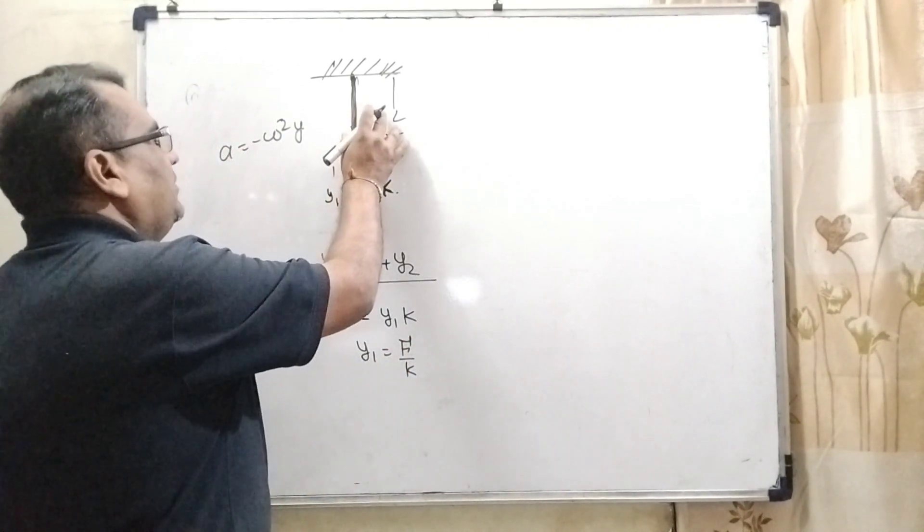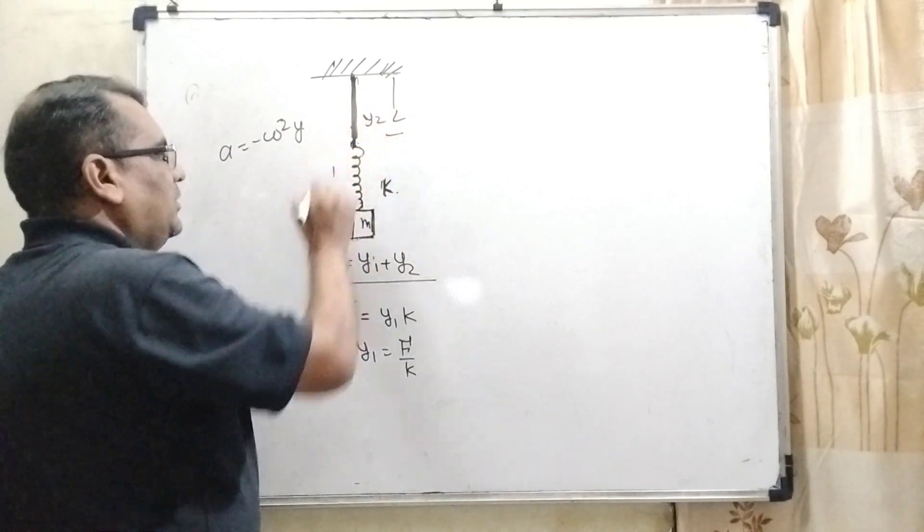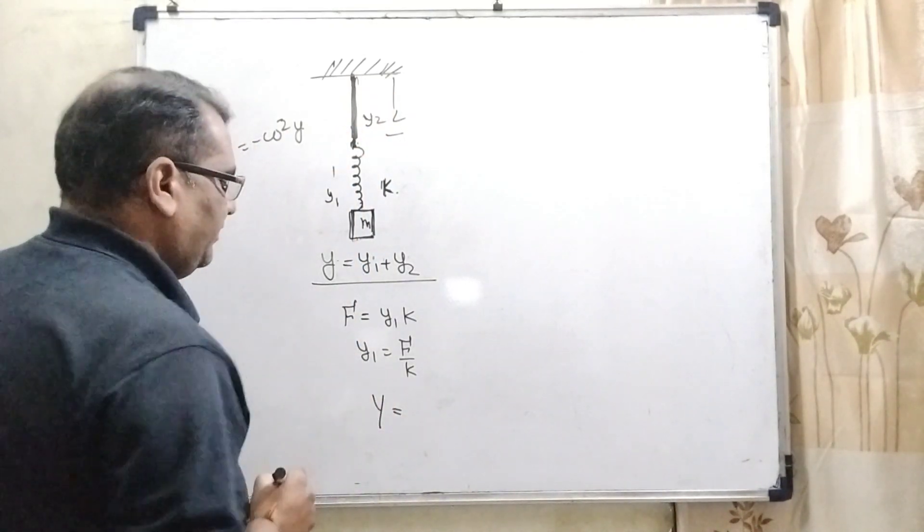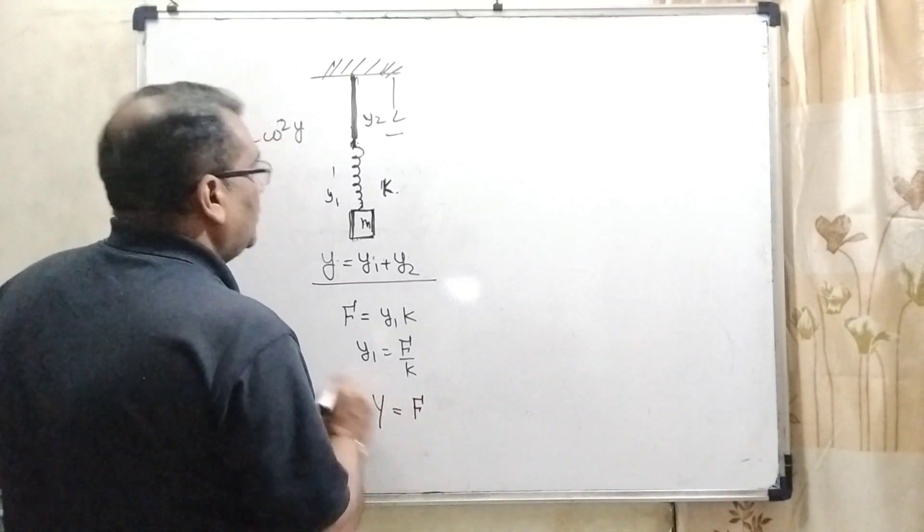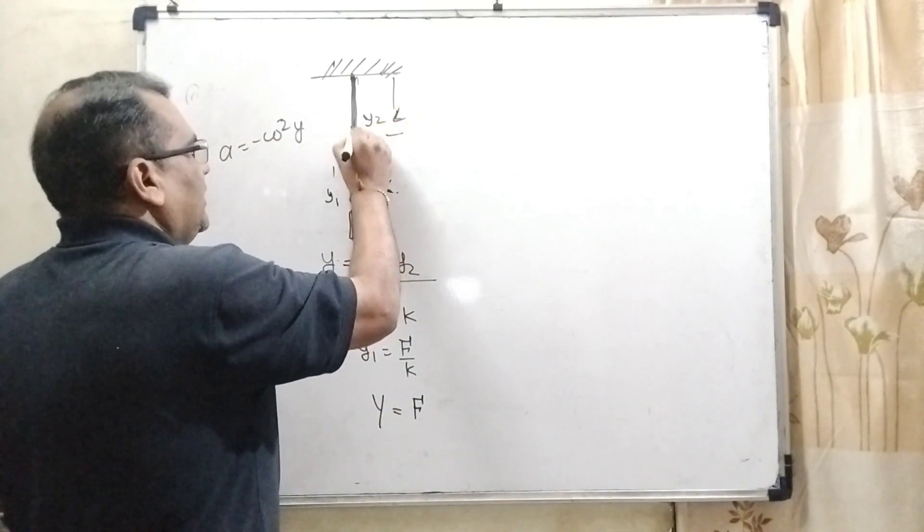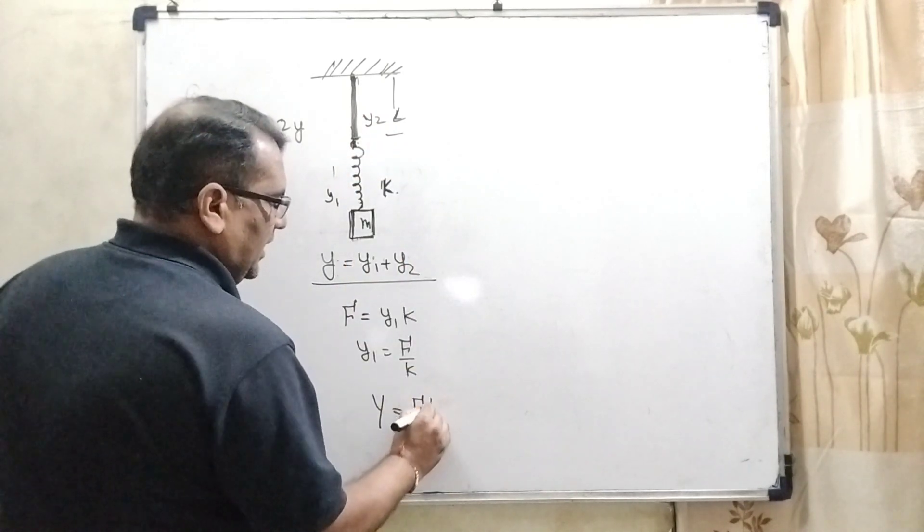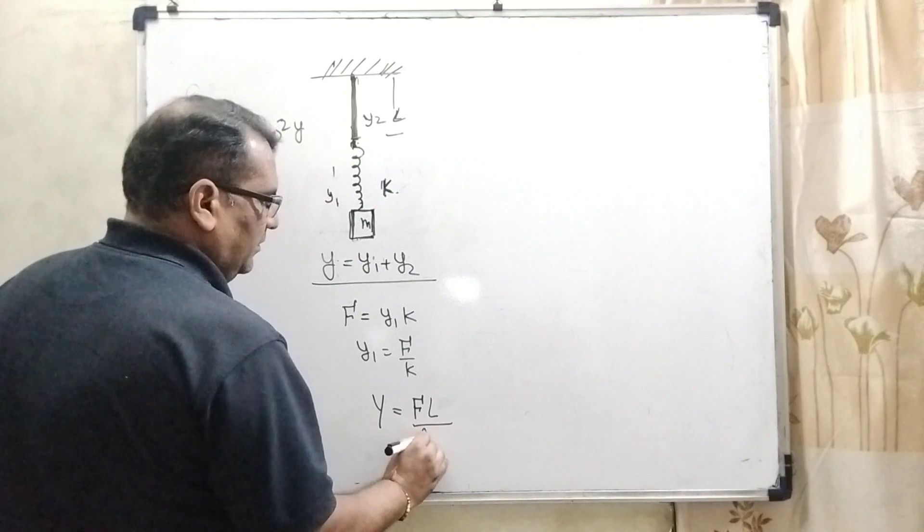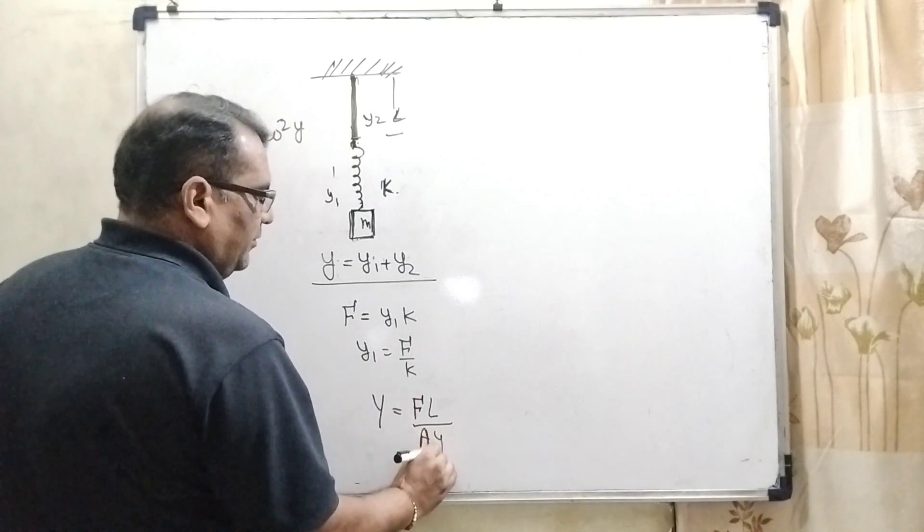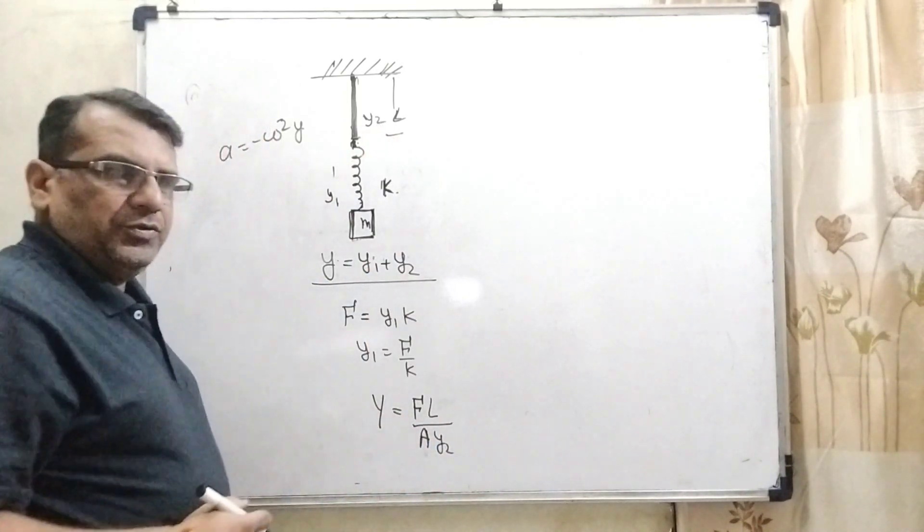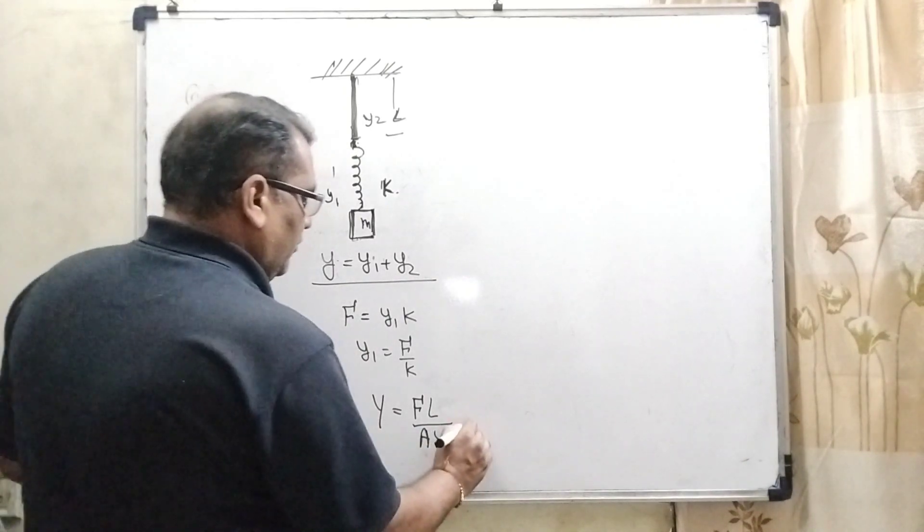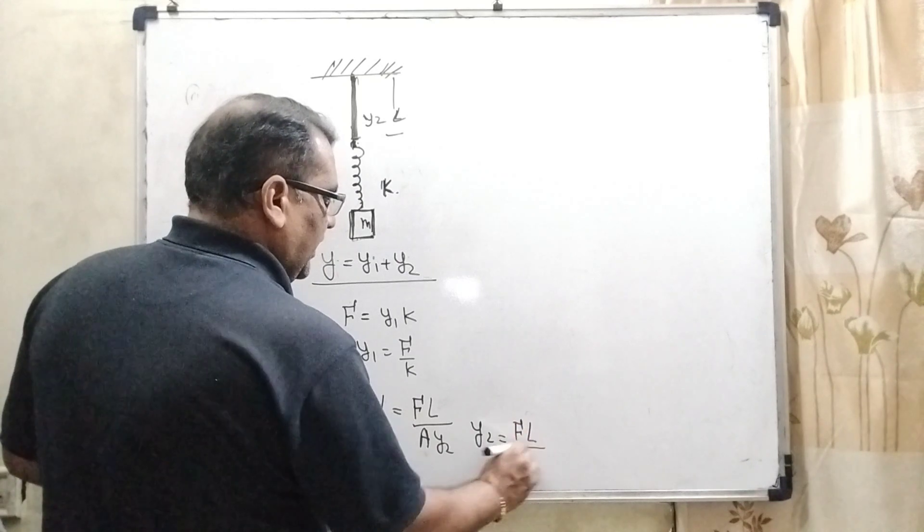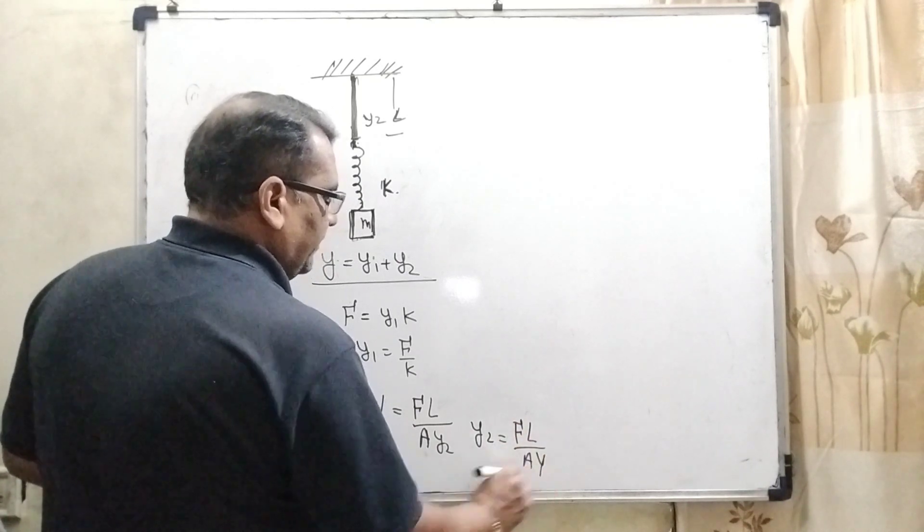And for the elongation y2, we know that Young's modulus Y equals F/A times L/y2, where the total length of this wire is L, and cross section area of this wire is A, and elongation of this wire is y2. So y2 can be written as FL divided by AY.